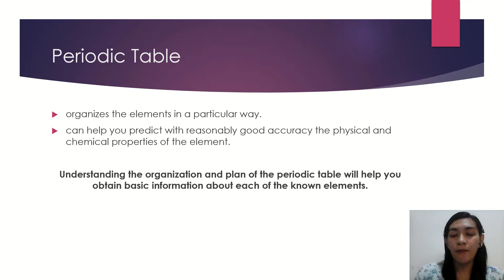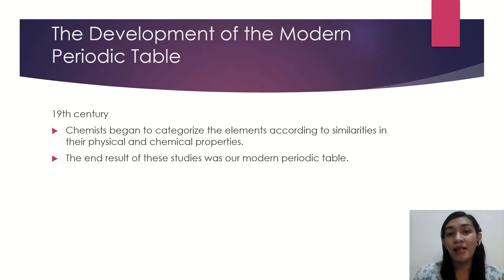In the 19th century, chemists began to categorize the elements according to similarities in their physical and chemical properties. These different studies actually resulted in our modern periodic table. We would be highlighting some of the significant chemists who contributed to the development of the modern periodic table.